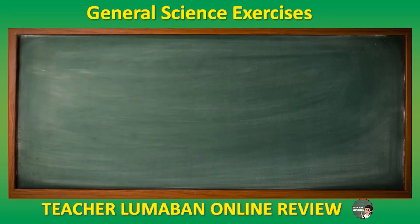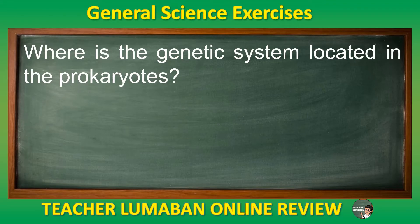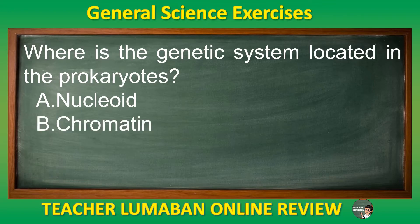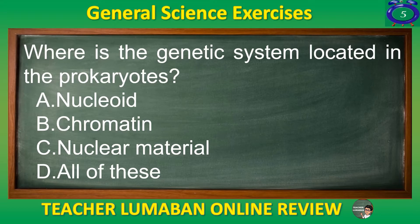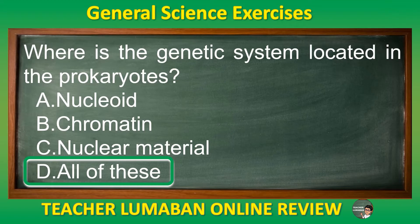Where is the genetic system located in prokaryotes? Letter A: Nucleoid. Letter B: Chromatin. Letter C: Nuclear Material. Letter D: All of these. The correct answer is Letter D: All of these.